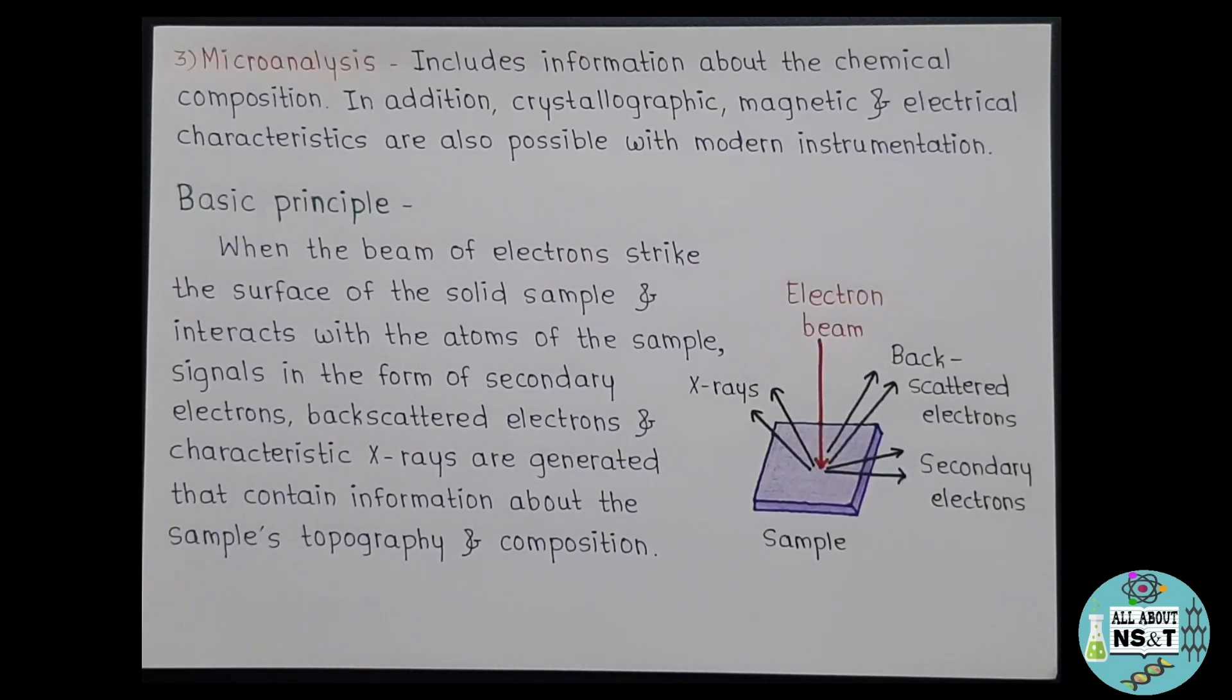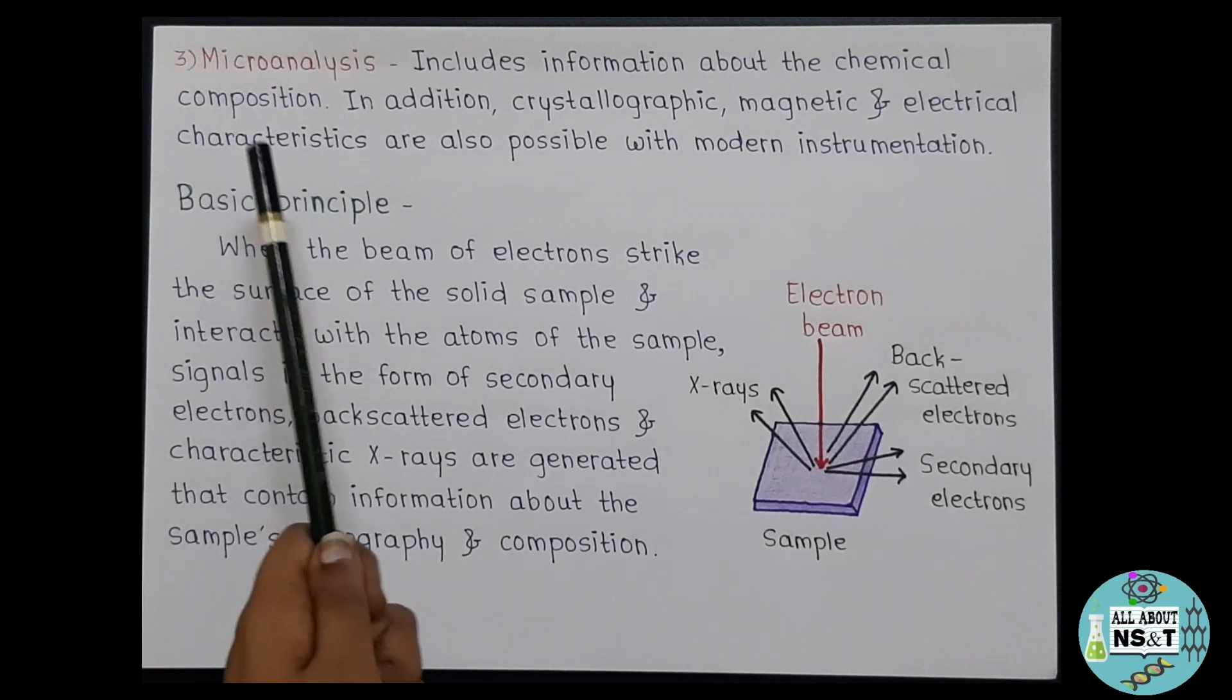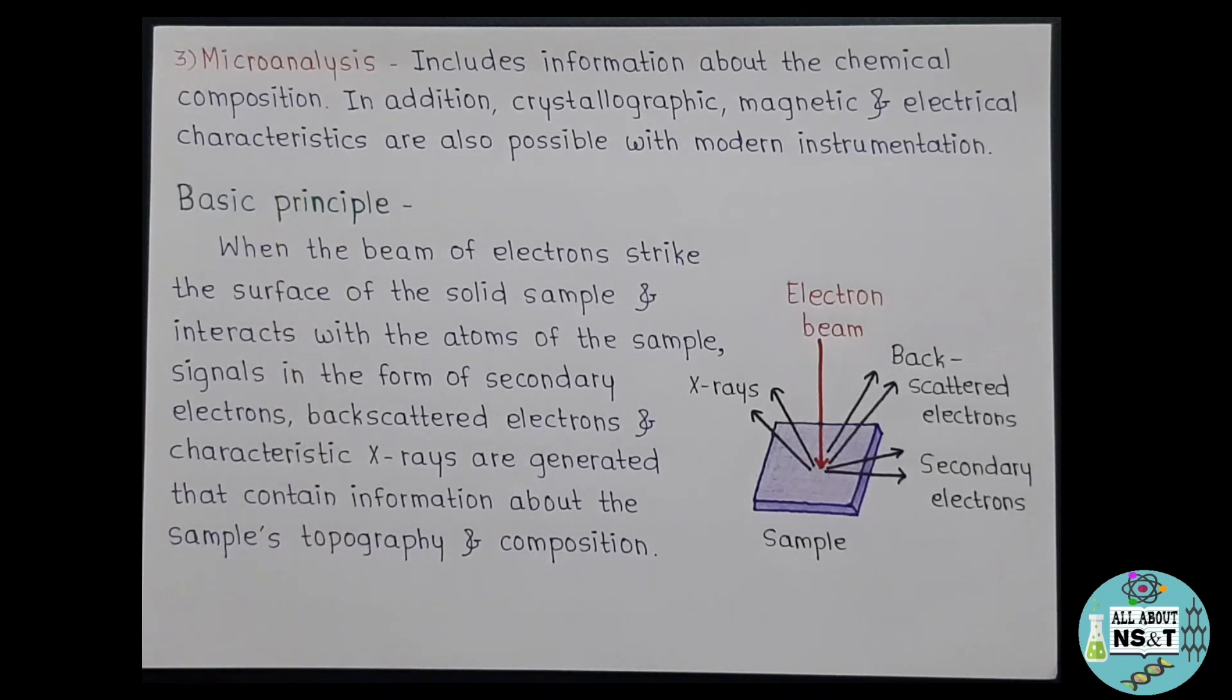Now the last reason that proves SEM better is microanalysis. It is the analysis of sample composition that includes information about the chemical composition. In addition, crystallographic, magnetic, and electrical characteristics are also possible with modern instrumentation, whereas light microscope cannot provide such information about the sample. So with this, now I think it must be clear to you why SEM is considered superior and preferred over light microscope when it comes to characterizing the nanomaterials.